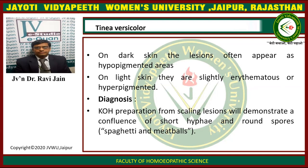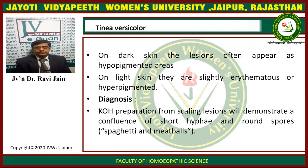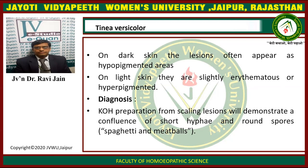On dark skin, the lesions often appear as hypopigmented areas. On light skin, they are slightly erythematous or hyperpigmented. The diagnosis of tinea versicolor is done by KOH preparations. From the scaling lesions, we demonstrate confluent short hyphae and round spores — that is the characteristic spaghetti and meatball appearance.